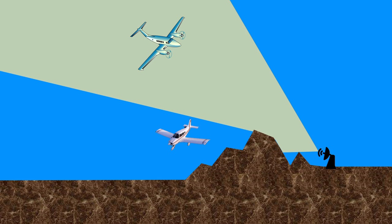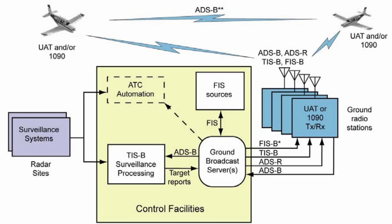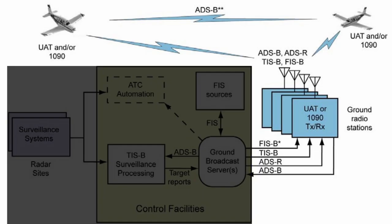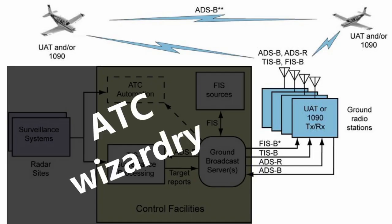On the FAA's website, you can read that ADS-B provides real-time precision, shared situational awareness and advanced applications for pilots and controllers. Without getting too technical, we'll avoid all the electrical witchcraft which happens during communications between all the ground systems.